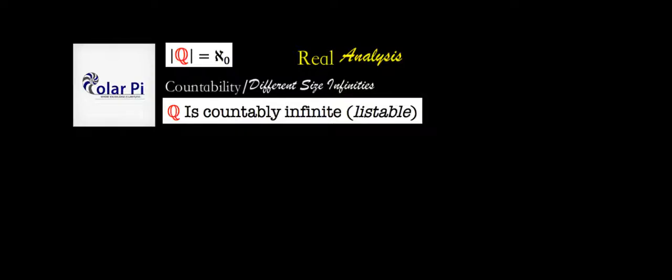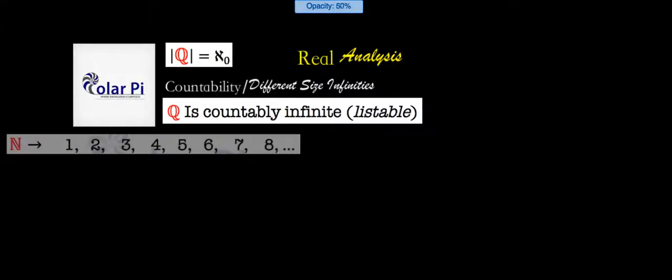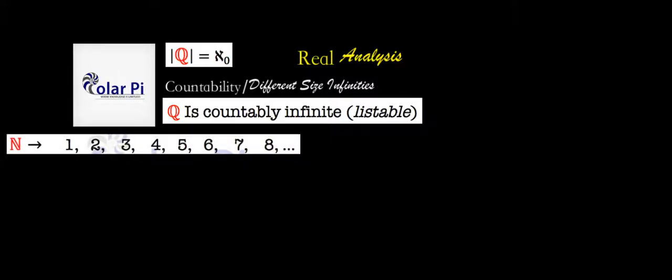And then you can use a similar idea to show that Q generally is countably infinite. Now, the way we're going to do this, as usual, is figure out how to put the elements of Q in one-to-one correspondence with the natural numbers. So, let's get our list of natural numbers ready for that.